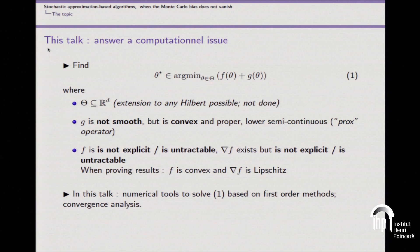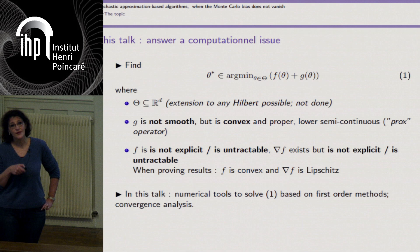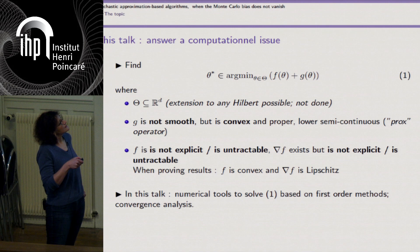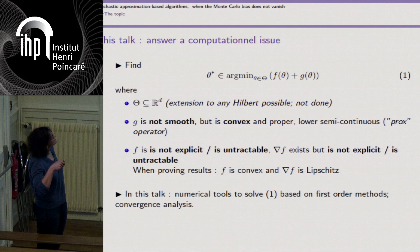The optimization problem I want to solve is to find a point minimizing a function written as the sum of two terms, over a subset of R^d. The objective function has a part G which is non-smooth but convex. The other part F is not explicit — we cannot compute F exactly at a point theta, nor its gradient exactly at any point theta — but the gradient exists.